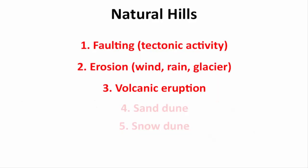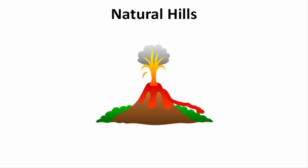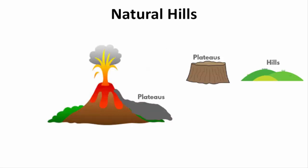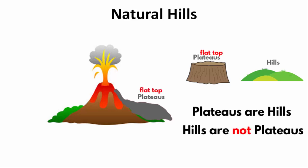Hills can also be formed due to volcanic eruption. When a volcano erupts, it releases a large amount of lava. When this lava gets accumulated at one place in multiple layers, it turns into a plateau. All plateaus are hills, but not all hills are plateaus, because plateaus are hills with a flat top. That means these volcanic plateaus are also volcanic hills.